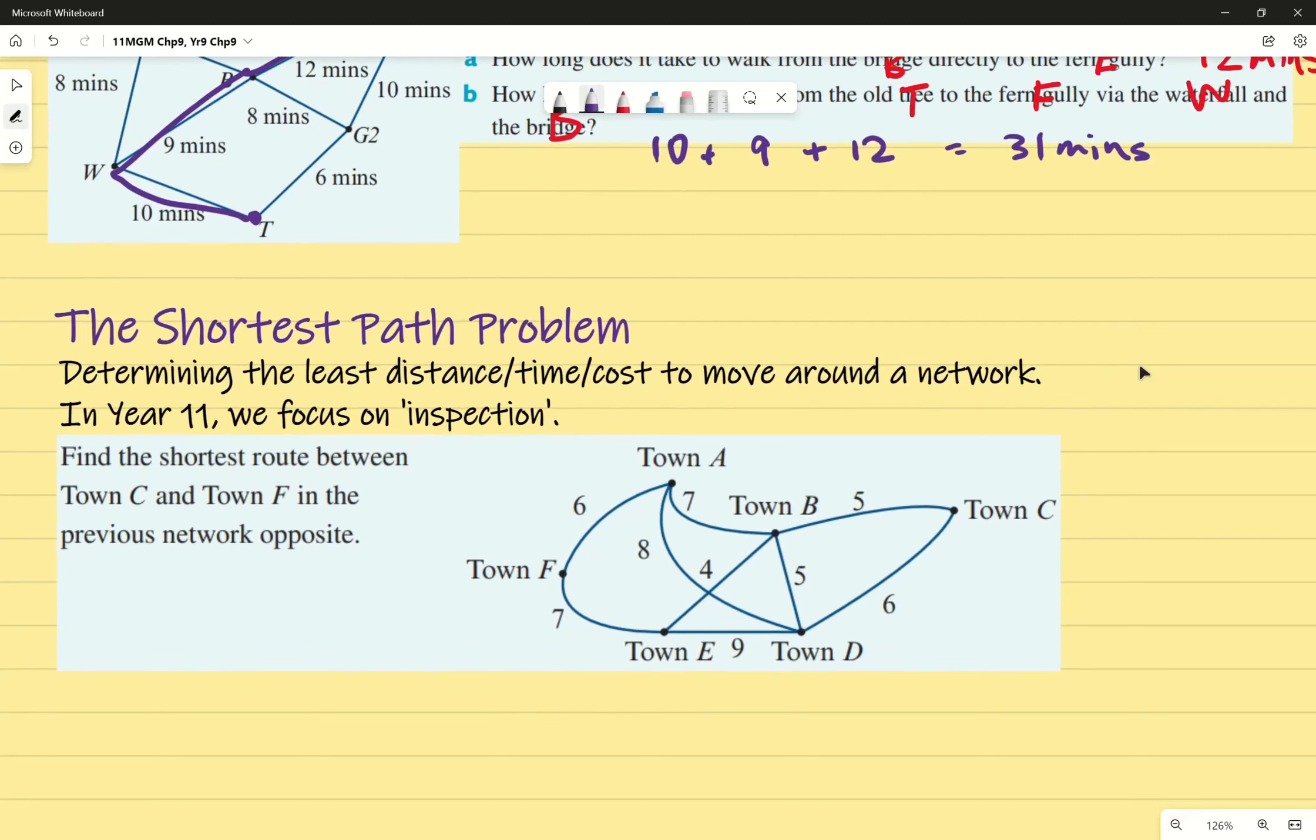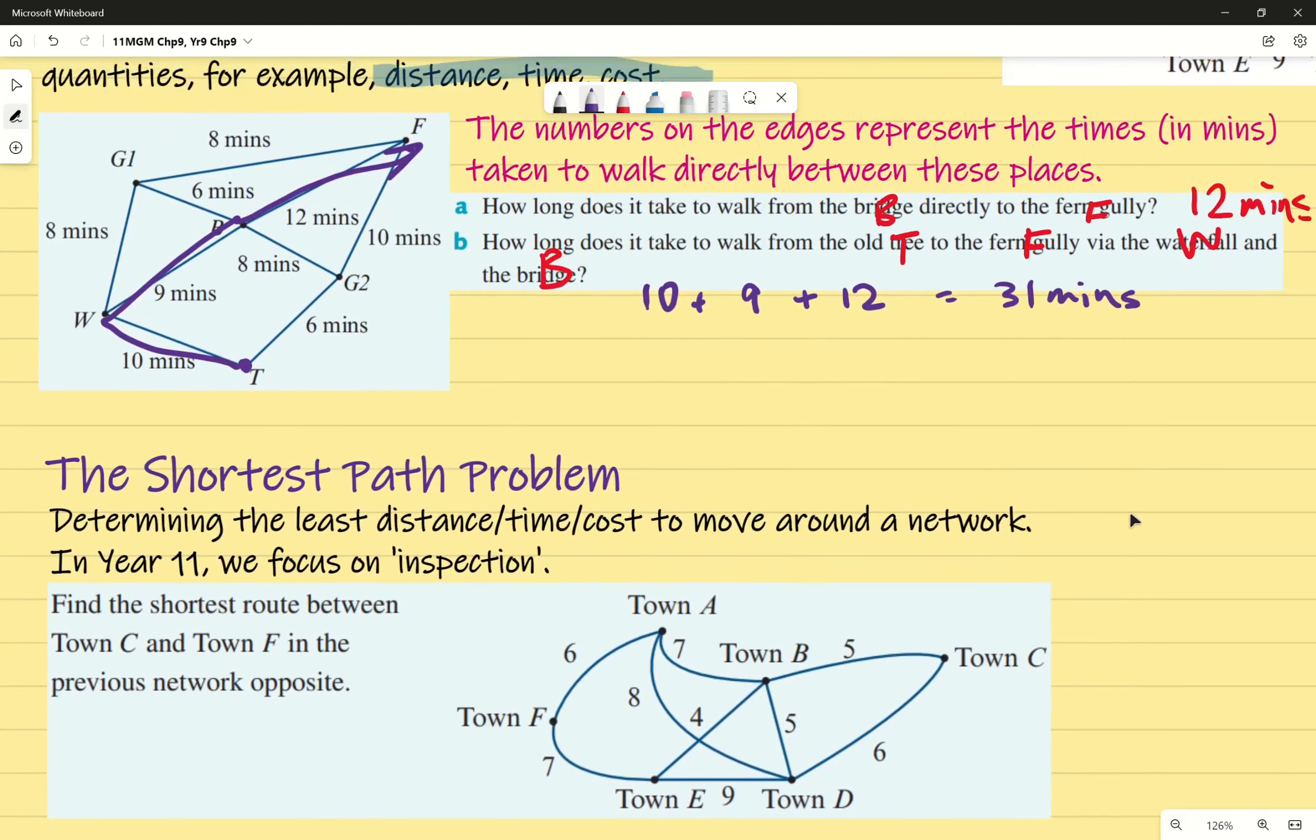So instead, we use the shortest path problem. In other words, we're determining the least distance, time, or cost to move around a network. In year 11, we're focusing on the idea of inspection. Inspection is just look at it and see. There are some ways in year 12 that you look at a more systematic approach, but in year 11, we focus on the idea of just looking at it, inspecting, and see if we can get the correct answer from there.